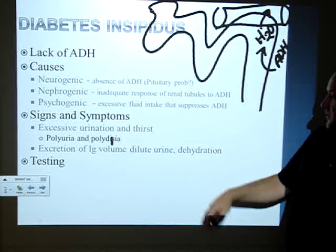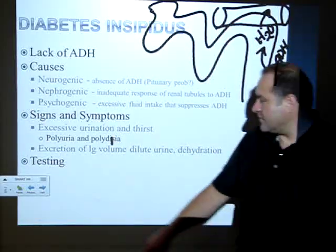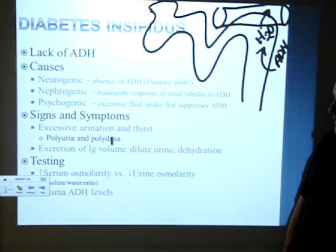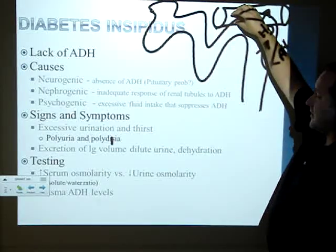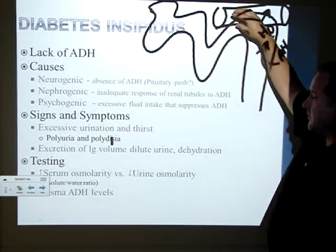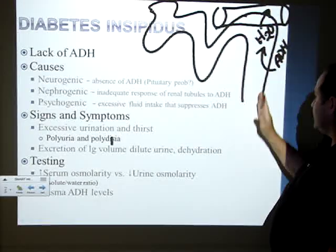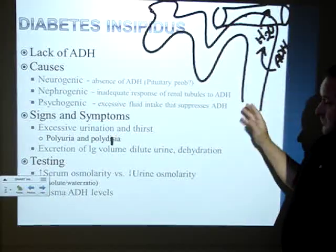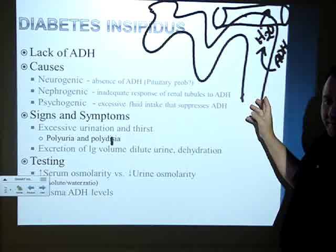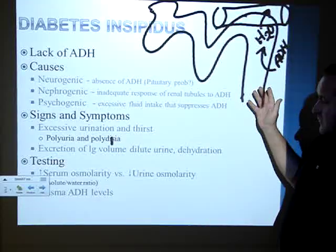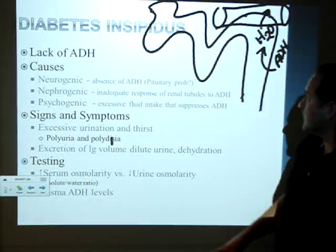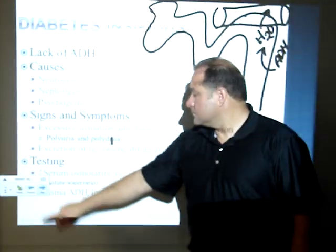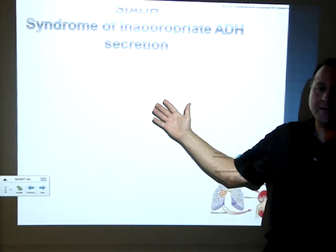Signs and symptoms of diabetes insipidus: polyuria — many urinations — and polydipsia — excessive thirst and drinking. You excrete a large volume of dilute urine and become dehydrated. Testing involves serum osmolarity — how much stuff in your bloodstream versus urine — checking the water-to-solute ratio. You can also directly test plasma ADH levels.